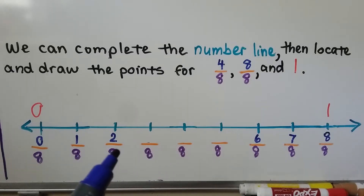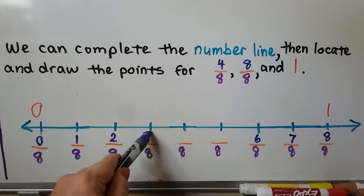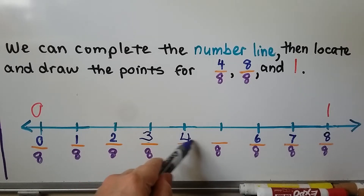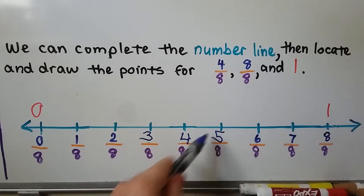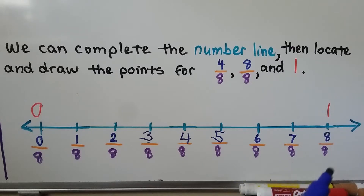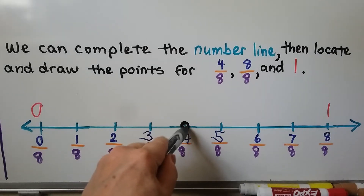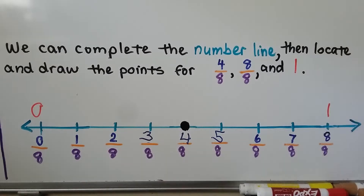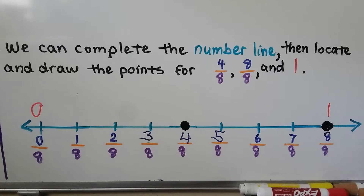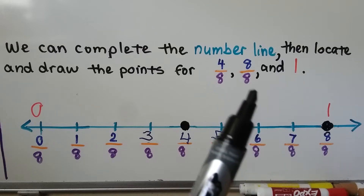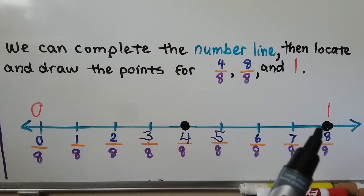It goes one, two, and then three-eighths, then four-eighths, five-eighths, six-eighths, seven-eighths, and eight-eighths. We can locate and draw the points for four-eighths right here, and eight-eighths and one are over here. Eight-eighths is equal to one, so we only have two points drawn on the line for these three numbers because eight-eighths and one are the same point.